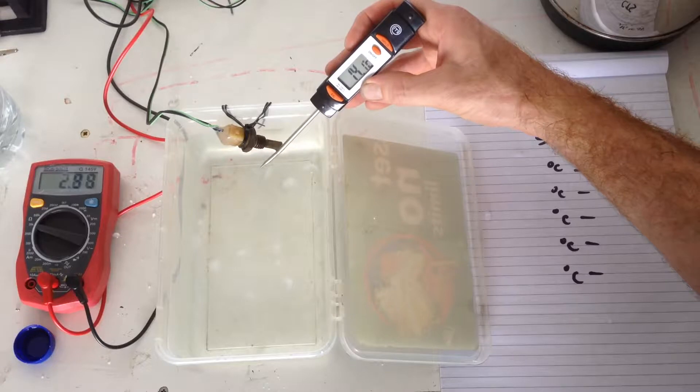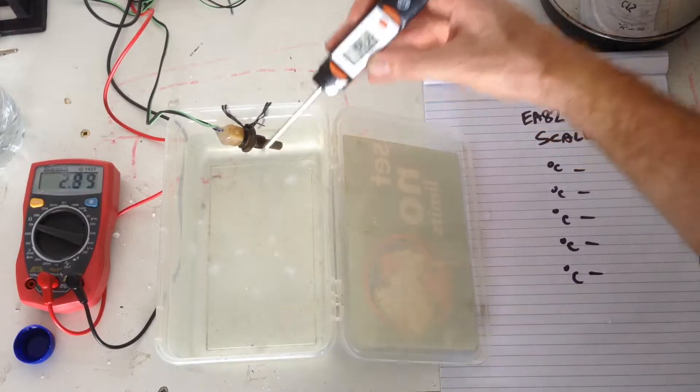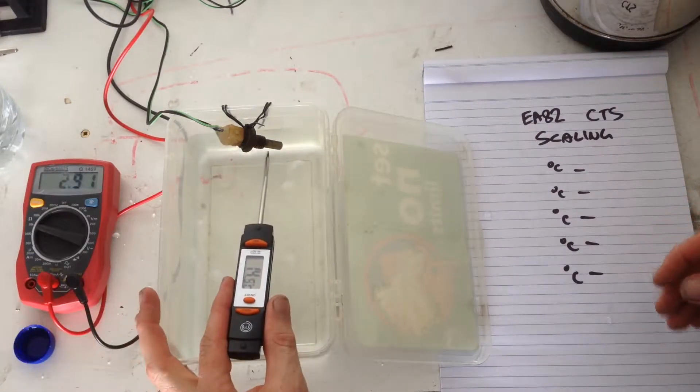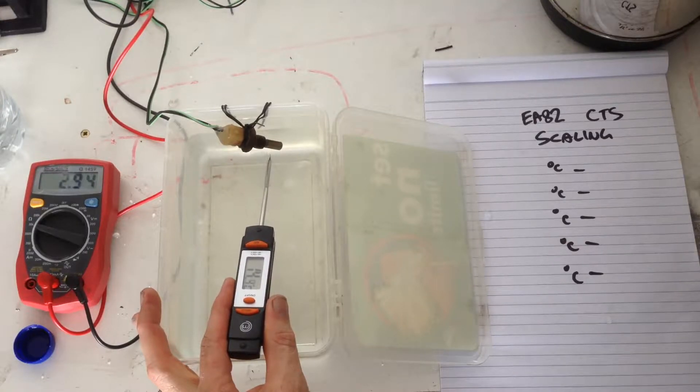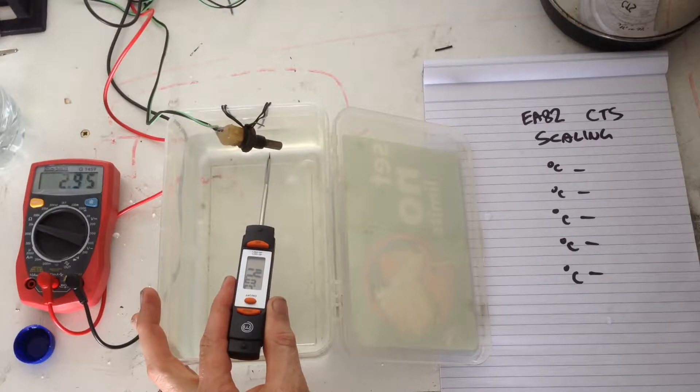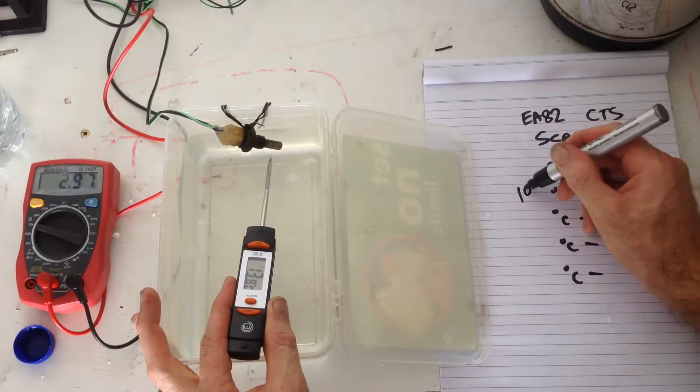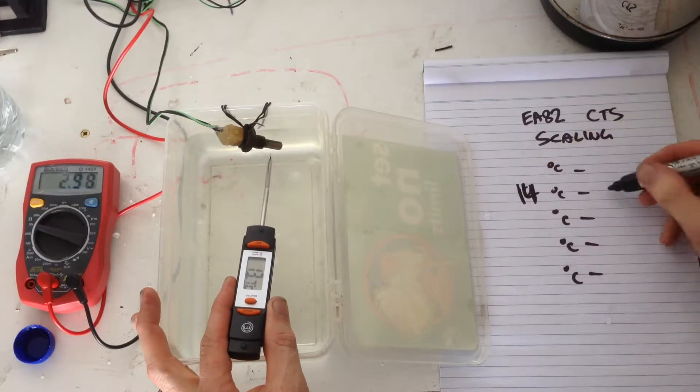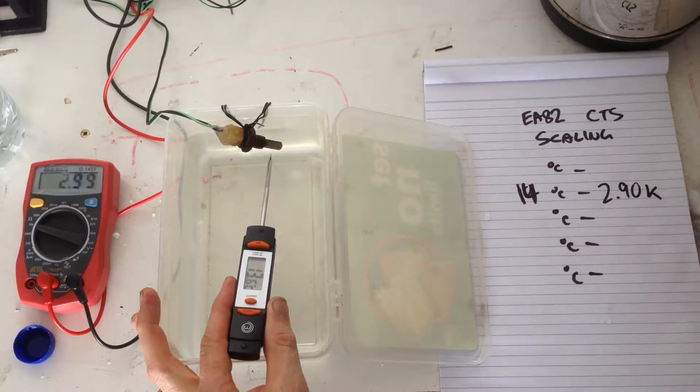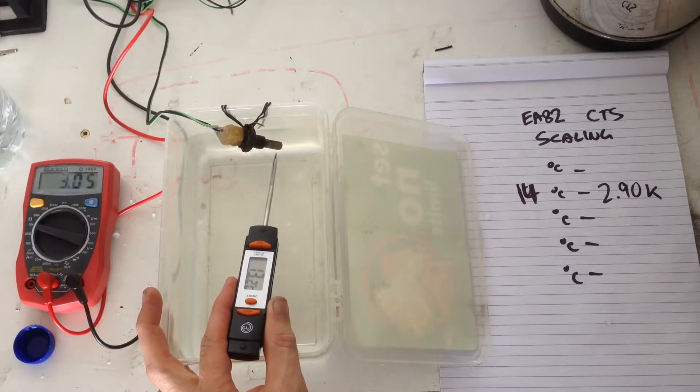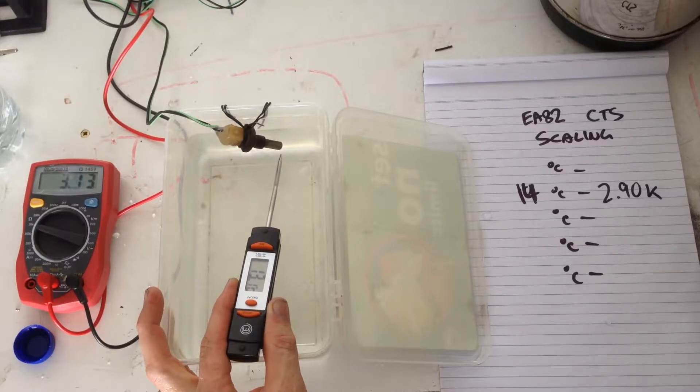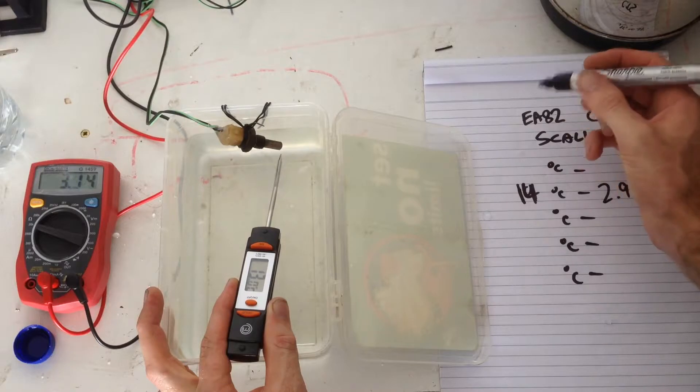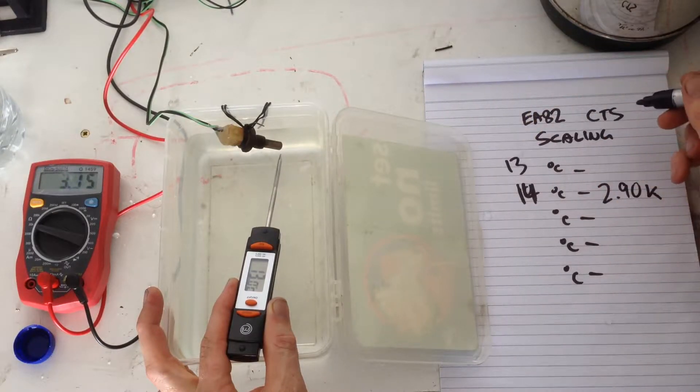Alright, now we're down at 14. It's like 14 degrees, we're at 2.9k. It doesn't look like we're going to get any lower than 13.1 degrees. There we go, it's 13 degrees and it's 3.15 K.